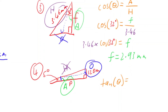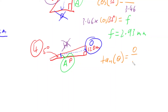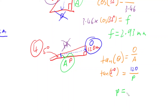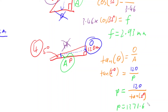Tan of 5 degrees equals 120 over P. Again, the unknown is on the bottom. P can swap with the trig ratio and angle on this side: tan of 5 degrees moves to the bottom, and 120 stays on top, giving P equals 120 divided by tan of 5 degrees. Plugging into the calculator, P is approximately 1,371.61 metres.